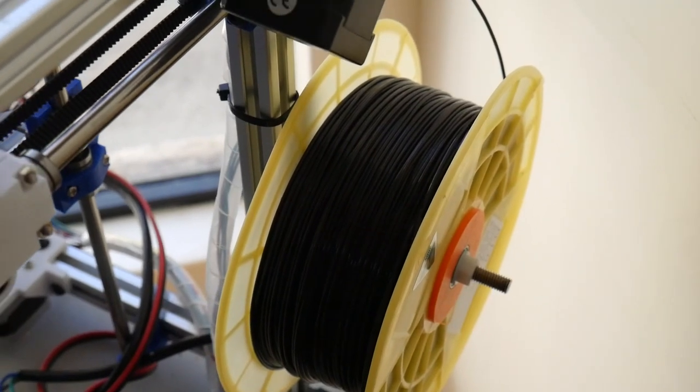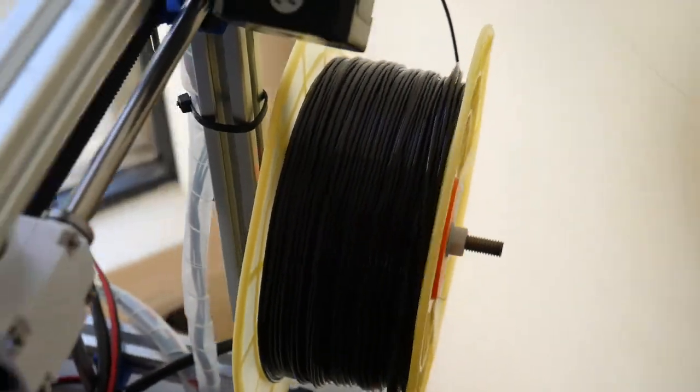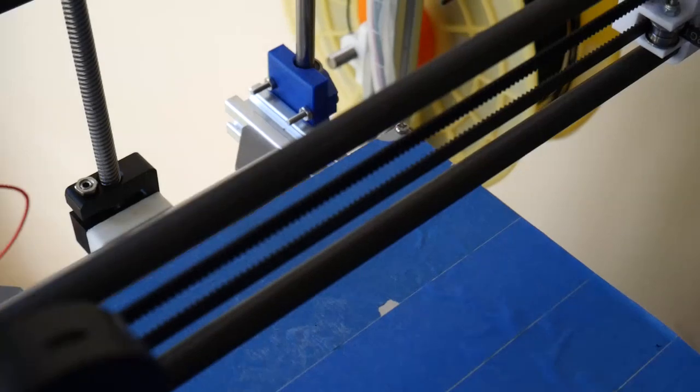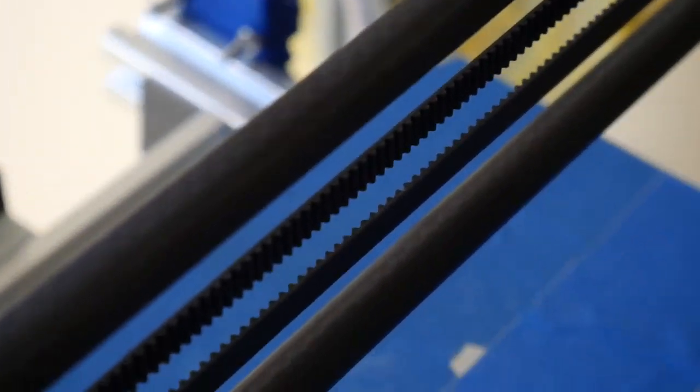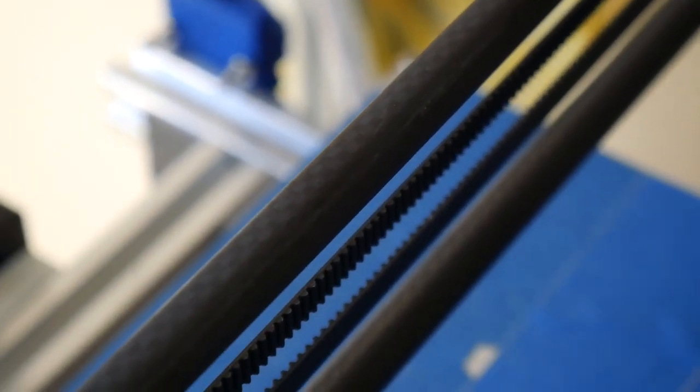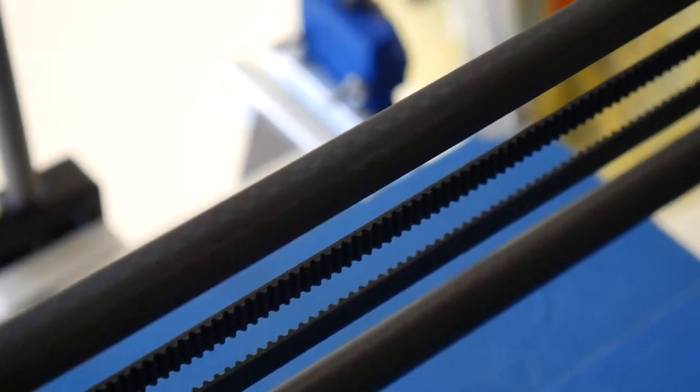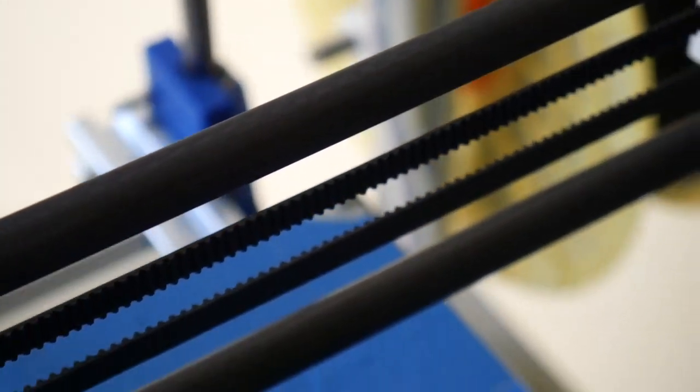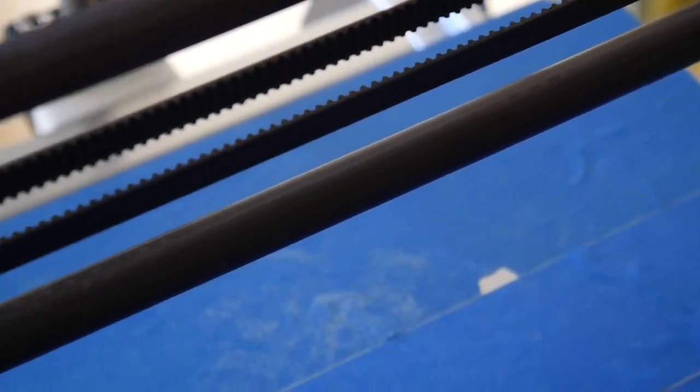I've consumed about a quarter of this roll of black PETG filament. It took about 20 hours to print that much filament from the roll, and there's no sign of any wearing on these carbon fiber tubes as of yet.